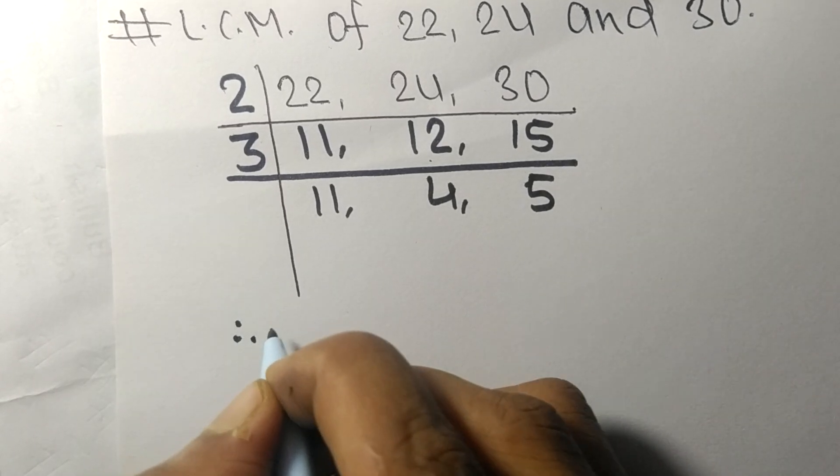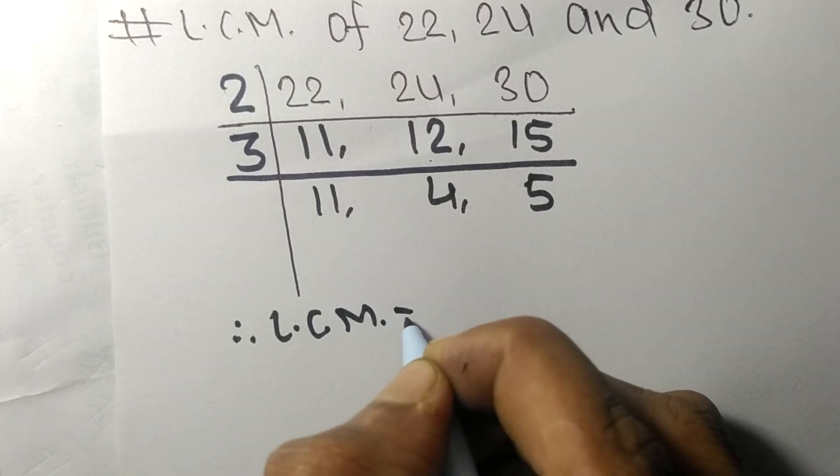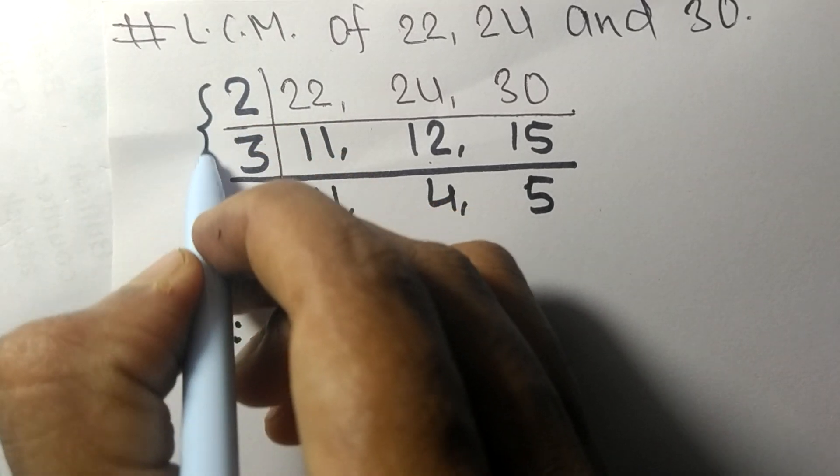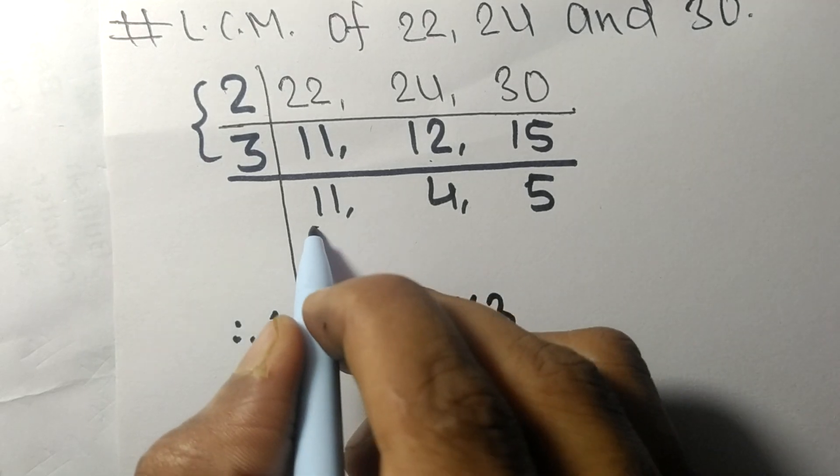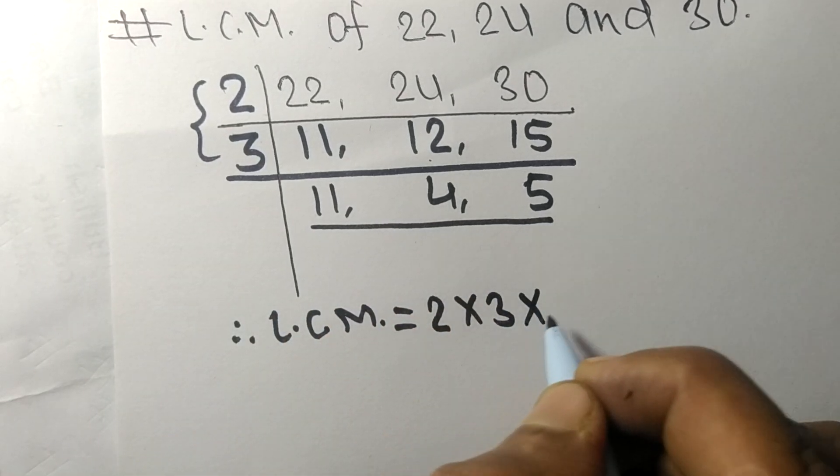Therefore, the LCM is equal to—from this side it is 2 and 3, from this side it is 11, 4, and 5.